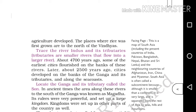Locate the Ganga and its tributary called the Son. In ancient times, the area along these rivers to the south of Ganga was known as Magadha, now lying in the state of Bihar. Its rulers were very powerful and set up a large kingdom. Kingdoms were set up in other parts of the country as well.